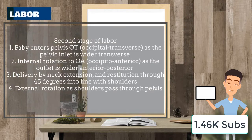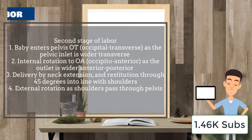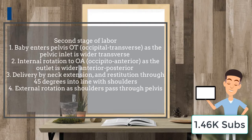In the second stage of labor, the baby enters the pelvis in the occiput transverse position, as the pelvic inlet is wider transversely. There is eventually internal rotation to the occiput anterior position, as the outlet is wider anteroposteriorly. There is delivery by neck extension and restitution through 45 degrees in line with the shoulders, followed by external rotation as the shoulders pass through the pelvis.